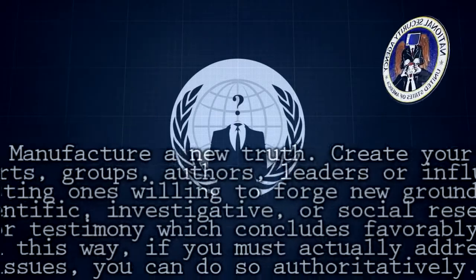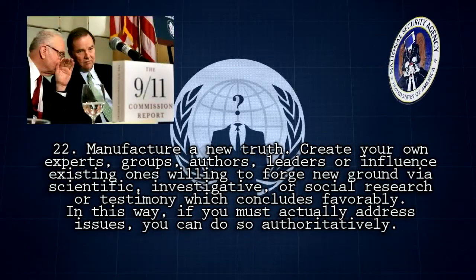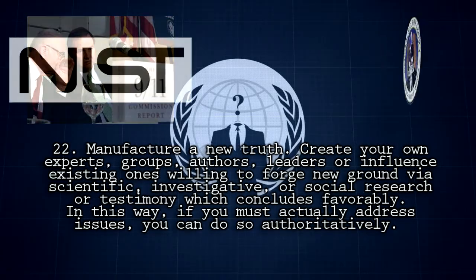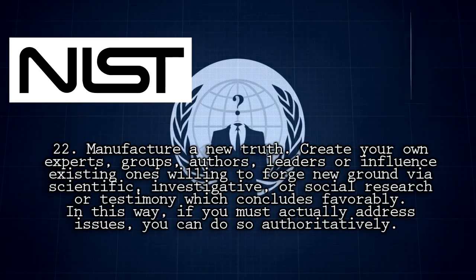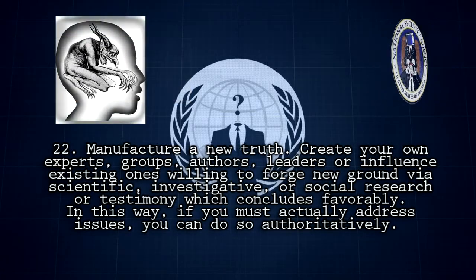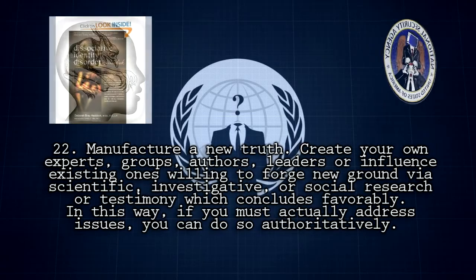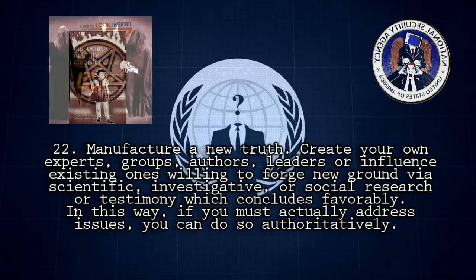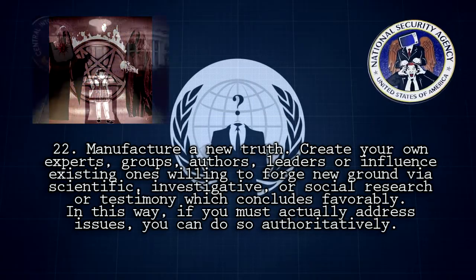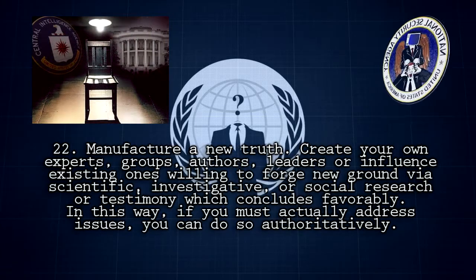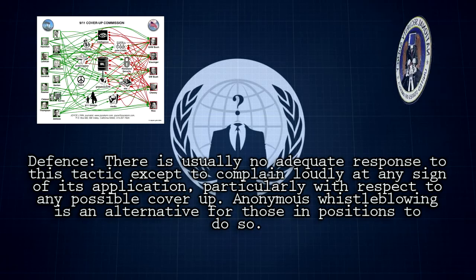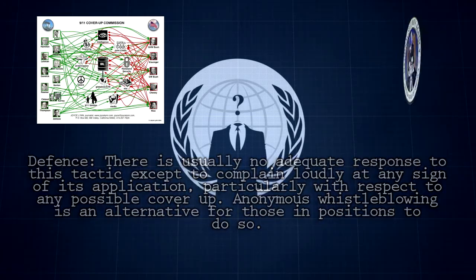Rule 22: Manufacture a new truth. Create your own experts, groups, authors, or leaders, or influence existing ones willing to forge new ground via scientific, investigative, or social research or testimony which concludes favorably. In this way, if you must actually address issues, you can do so authoritatively. Example: The False Memory Syndrome Foundation, American Family Foundation, and American and Canadian Psychiatric Associations fall into this category, as their founding members and/or leadership include key persons associated with CIA mind control research. Not surprisingly, these organizations conclude through their own research findings that there is no such thing as mind control. Defense: Unless you are well-versed on the topic and know the background and relationships involved in the opponent organization, you are not well-equipped to fight this tactic — do your research.